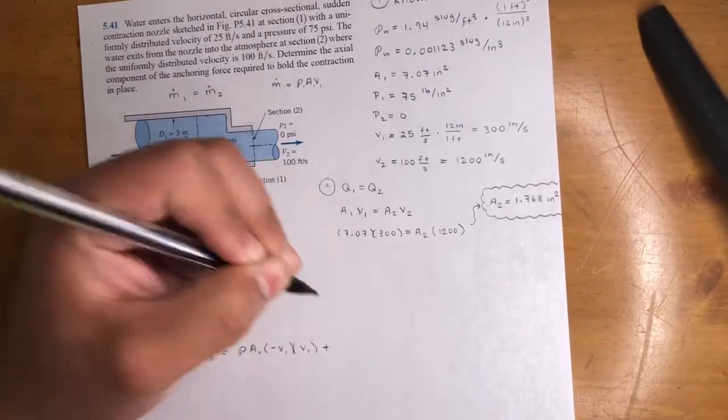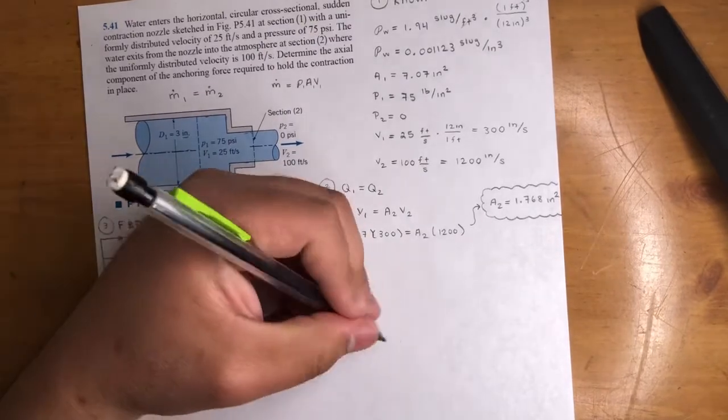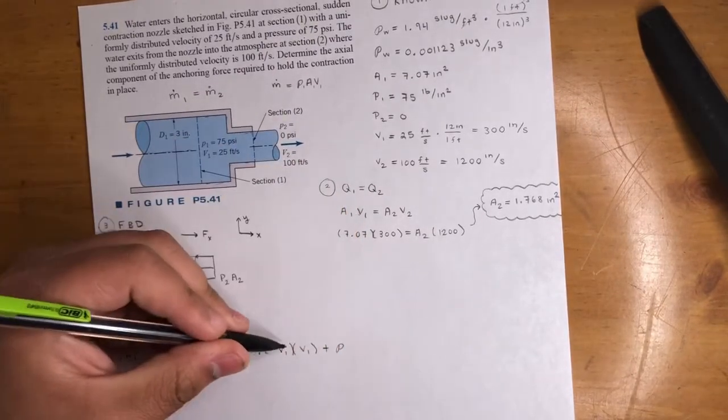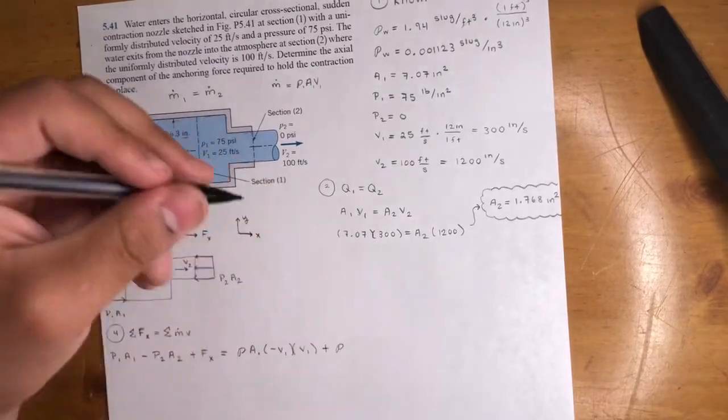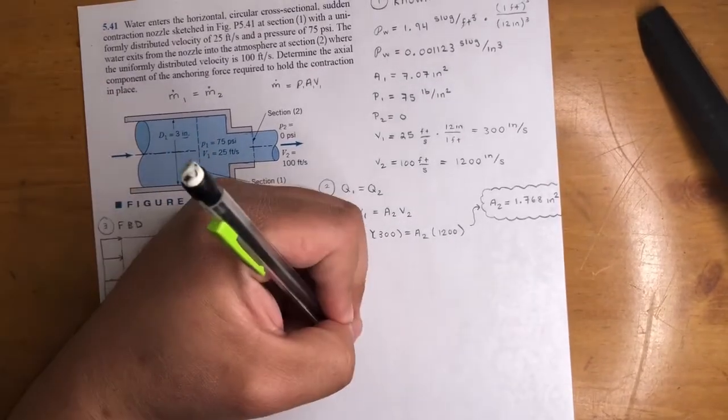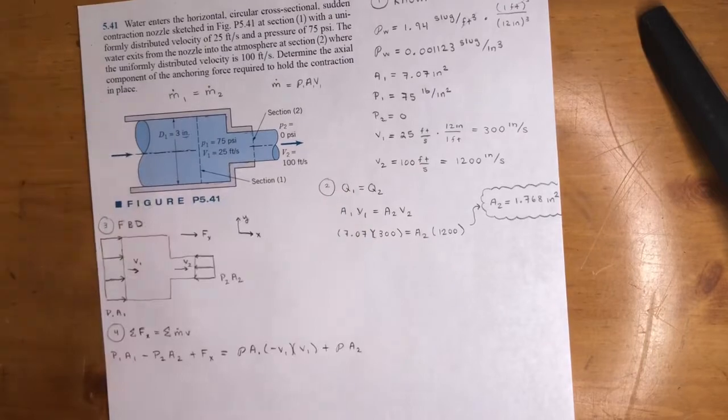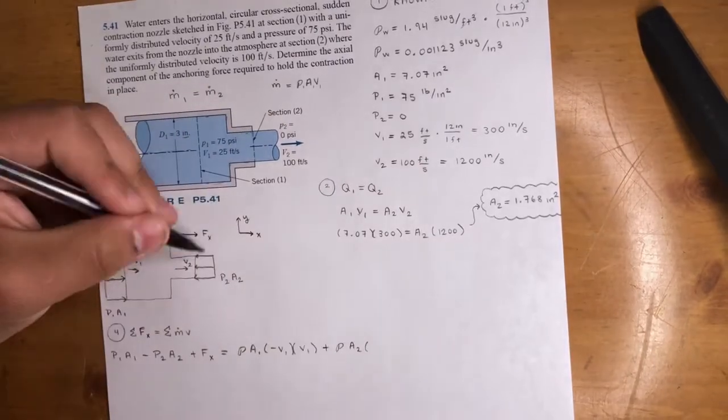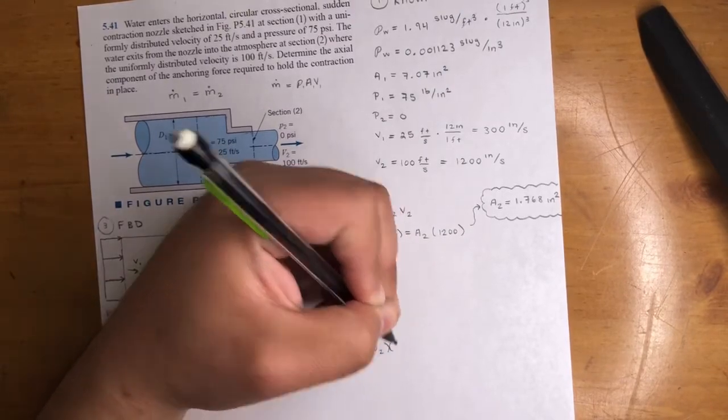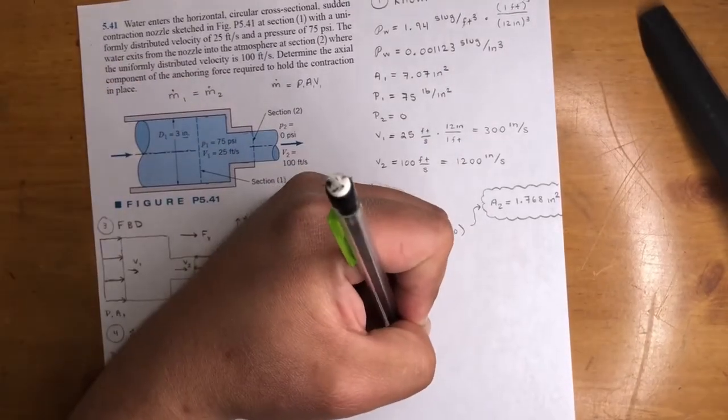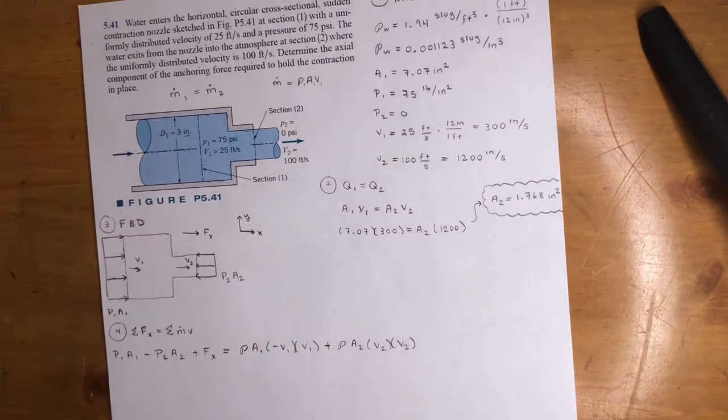Now, the next one. This will always be positive when you add more terms. Because, again, these signs will fix themselves in the end. So, plus rho A2. Let's do V2. That is outlet. It's outlet. So, it's positive. And it's going in the positive X direction. So, two positive V2s.